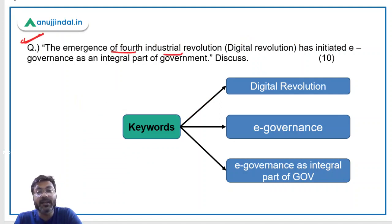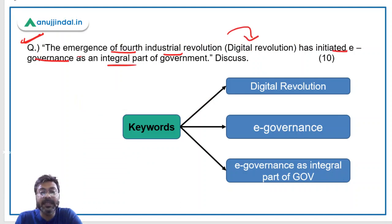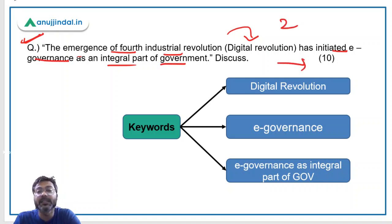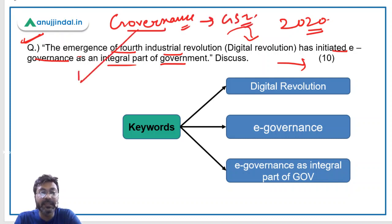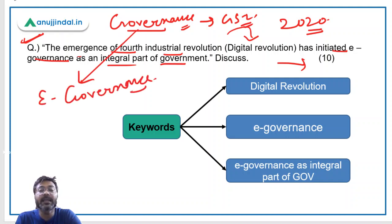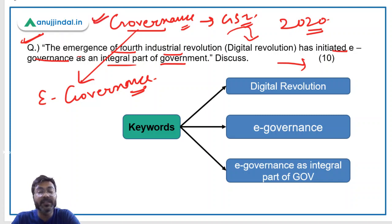The question is: 'The emergence of the fourth industrial revolution, that is the digital revolution, has initiated e-governance as an integral part of the government. Discuss.' This was a 10-marker question asked in the year 2020, and it is from the governance part of GS2 syllabus. Within governance, it talks about the subtopic of e-governance.